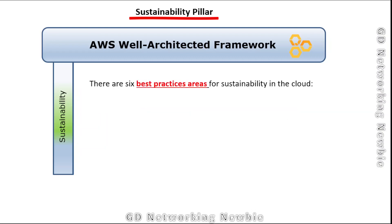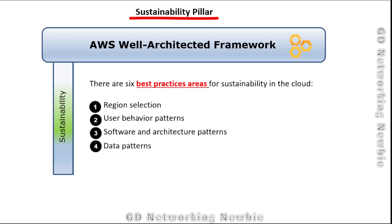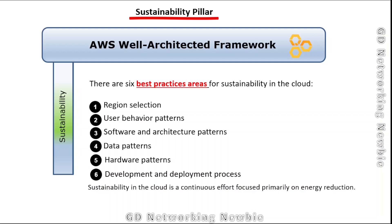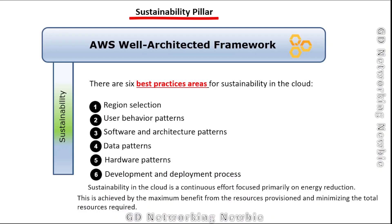There are also six best practice areas for sustainability in the cloud: region selection, user behavior pattern, software and architecture pattern, data patterns, hardware patterns, and development and deployment process. Sustainability in the cloud is a continuous effort focused primarily on energy reduction, achieved by maximizing the benefit from provisioned resources and minimizing the total resources required.